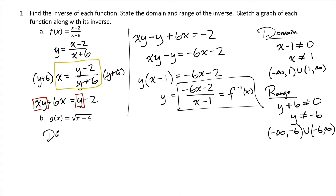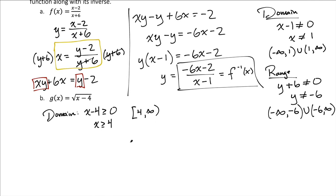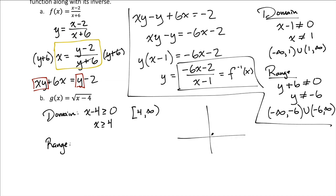Now let's look at part b. I'm going to start by stating the domain of this function g. We know that when you have a square root of something, that something has to be greater than or equal to 0. Adding 4 to both sides, we get x has to be greater than or equal to 4. So the domain is from 4 to infinity, including 4. The range: we know the square root function, and x minus 4 is a shift of 4 units to the right. The graph starts at 0 and goes up to infinity, so the range is from 0 to infinity.